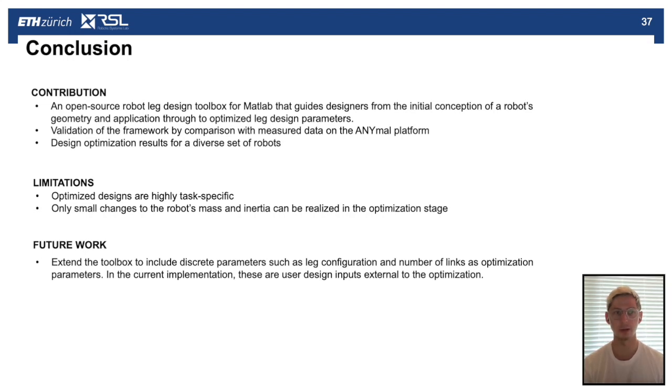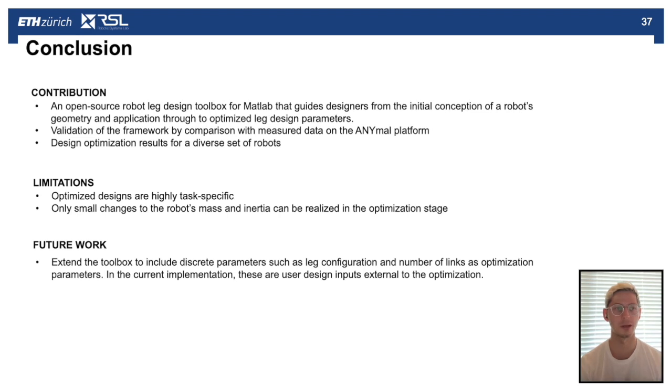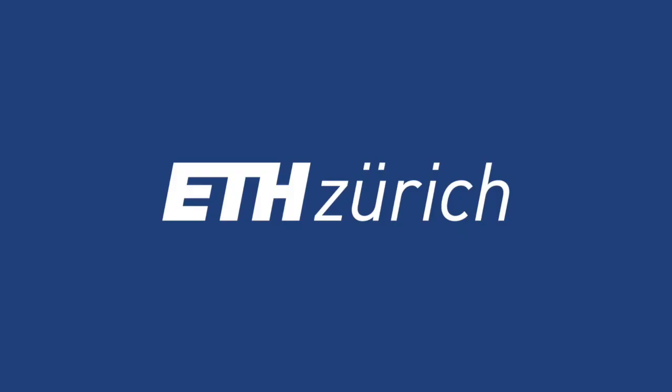In terms of future work, the next step would be to extend the toolbox to include discrete parameters such as the leg configuration and the number of links as optimization parameters. In the current implementation, these are user design inputs which are external to the optimization, but we could in the future bring them into the optimization so that we have an idea of the trade-off between X and M configuration or two versus three or four link legs.